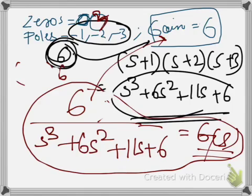Coming back to our example: the zero is zero, the poles are minus 1, minus 2, and minus 3, and the gain is 6. So the numerator is going to be 6. If we had been given a non-zero zero, it would be s minus that zero multiplied by 6. But in our case we have no such zero, so the gain of 6 is the numerator.